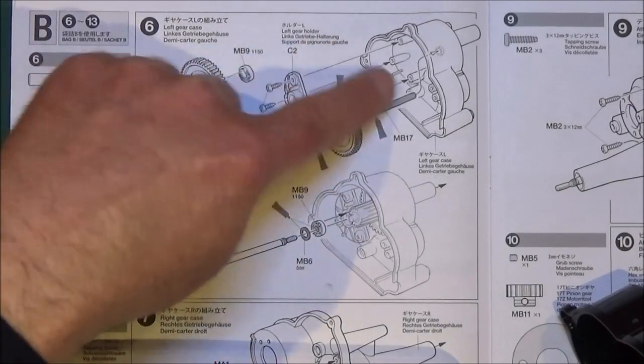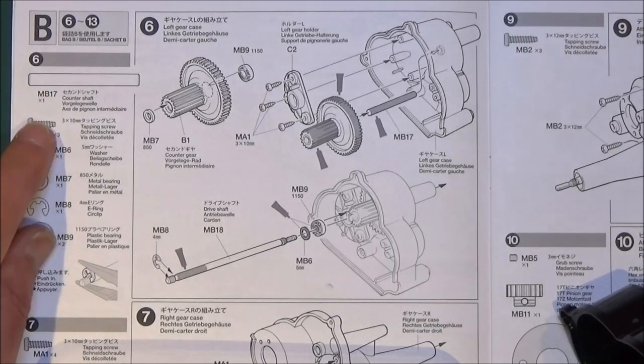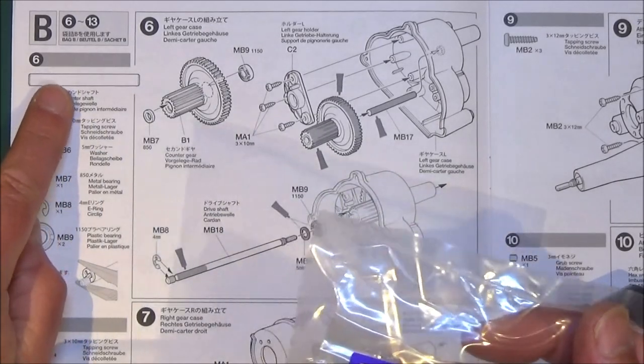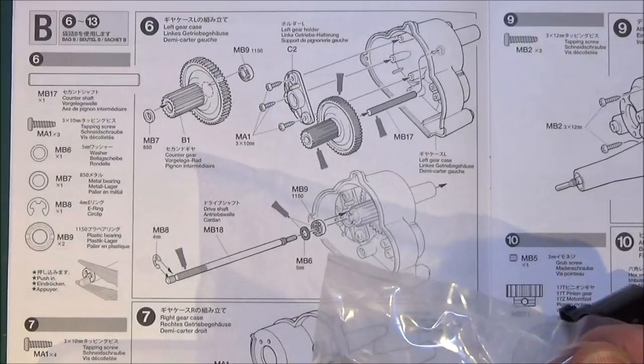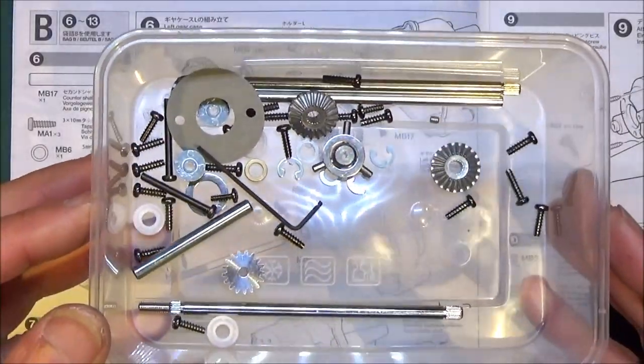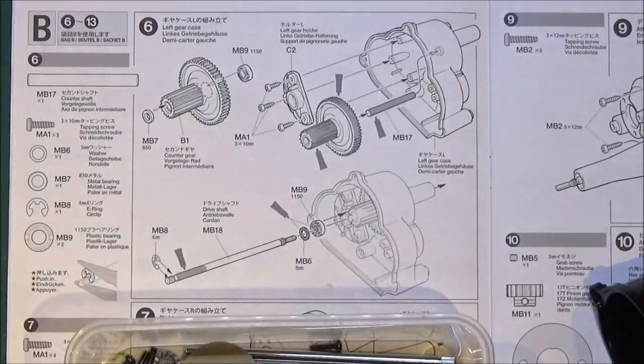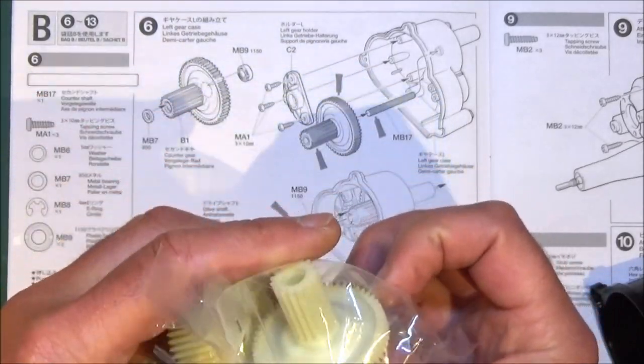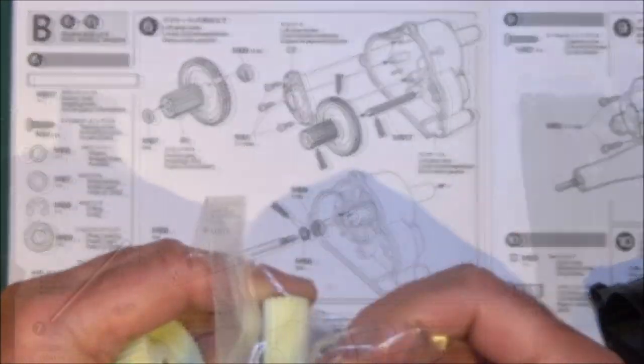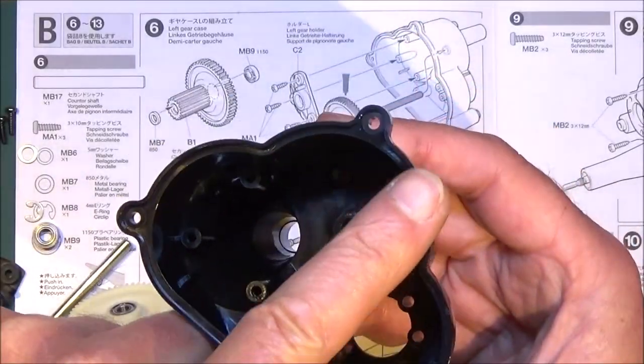On to step 6, which is assembling the left side of the gear case. For this, we want to open parts bag B, and that's going to do us all the way through from this step to step 13. As you can see, there's quite a few more parts in parts bag B.